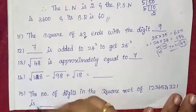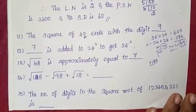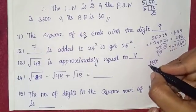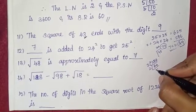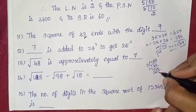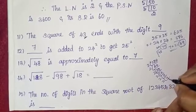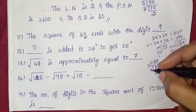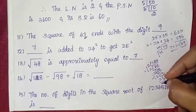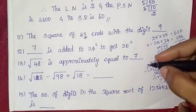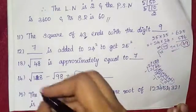For root 128, we use prime factorization. 128 equals 2 times 64, which is 2 times 32, then 2 times 16, 2 times 8, and 2 times 4. So we have 2 times 2 times 2 times 2 times 2 times 2 times 2. That's 8 root 2.